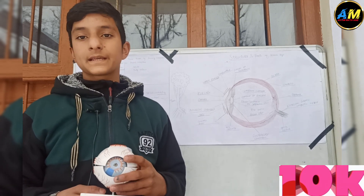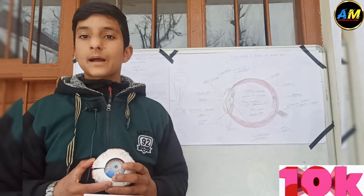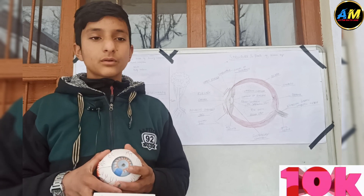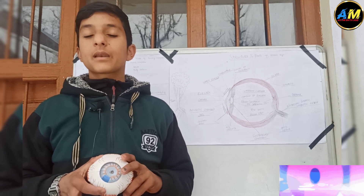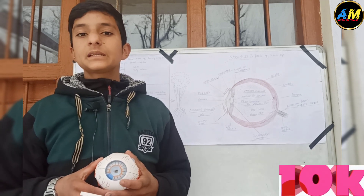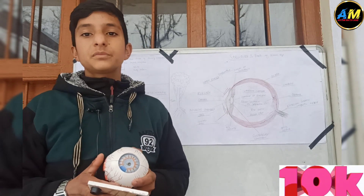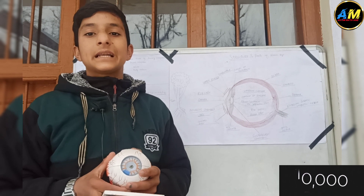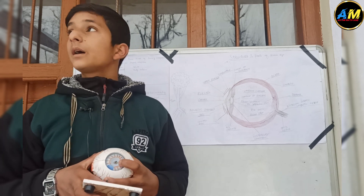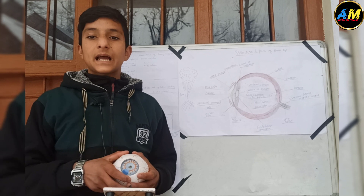We should take full care of our eyes. We should wash our eyes daily with clean water, not read or work in very bright or dim light, and not look directly at the sun — especially not during a solar eclipse. We should also eat vitamin A-rich foods for healthy, clear eyes.